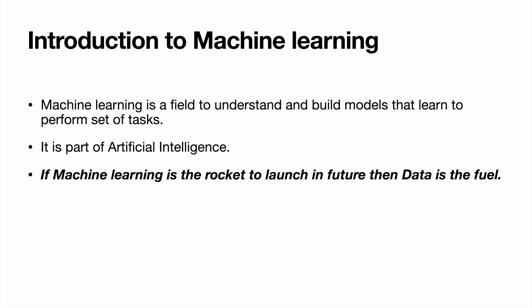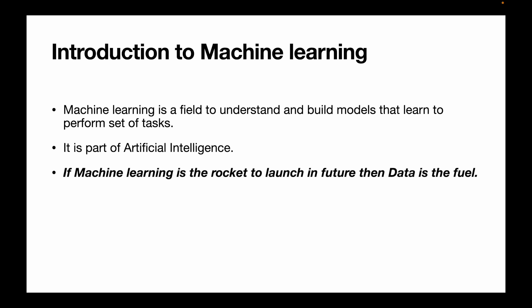Introduction to machine learning. Machine learning is a field to understand and build models that learn to perform a set of tasks. What we are saying here is we are trying to train a particular machine — let's say an algorithm — with a set of data, and we are trying to get our outcome. This process is called machine learning. Machine learning is a part of artificial intelligence.